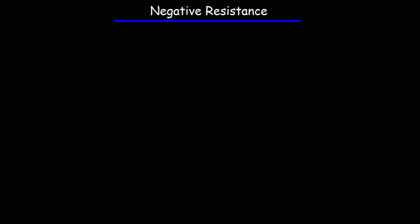Let's briefly review Ohm's law. Ohm's law states that voltage is the product of the current and the resistance. If you rearrange the equation dividing both sides by R, you'll get that the current is V over R. So that equation really describes current as a function of voltage.